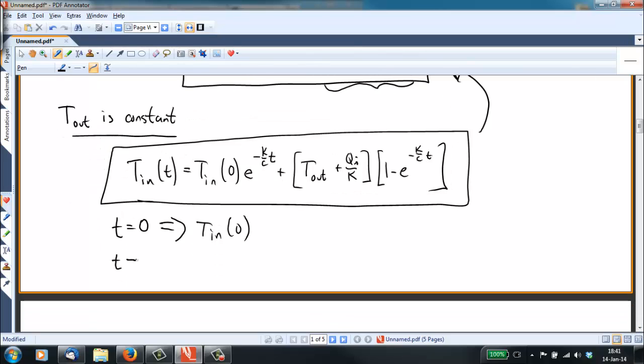When T time goes to infinity, then all the exponential terms go to 0, and the initial temperature becomes irrelevant, because after a long enough time, it doesn't matter what your initial temperature was. All we see is that we get a 0 down here, a 1 here, and so then the temperature on the inside, as T goes to infinity, is just going to be equal to T_out plus Q_I over K.